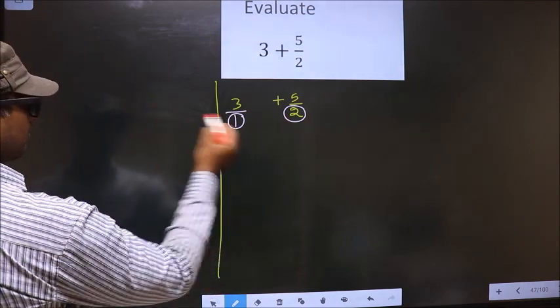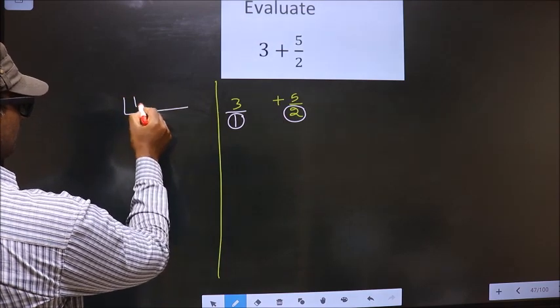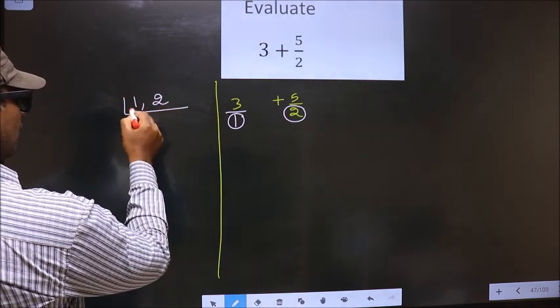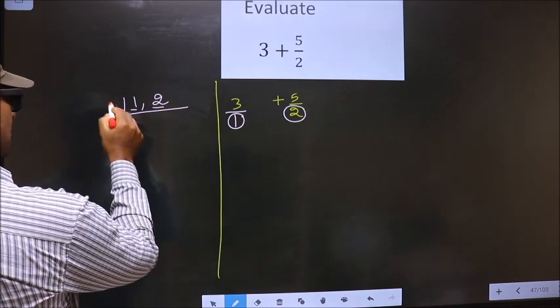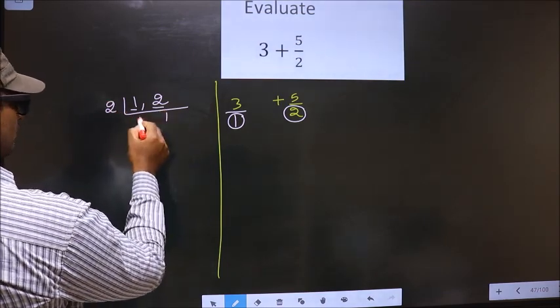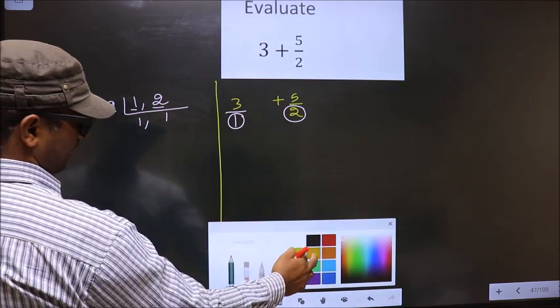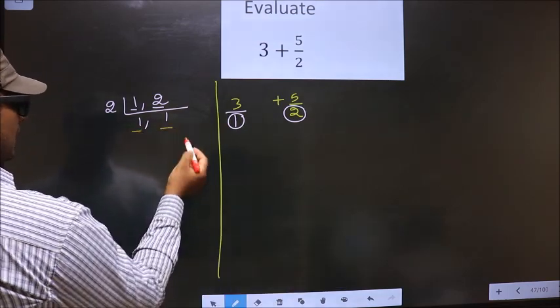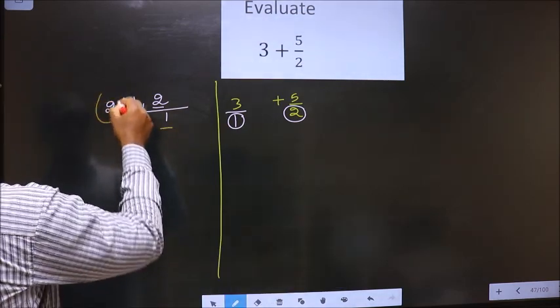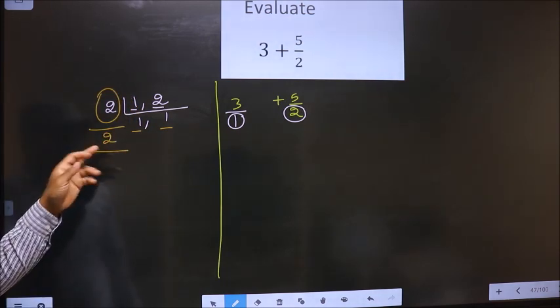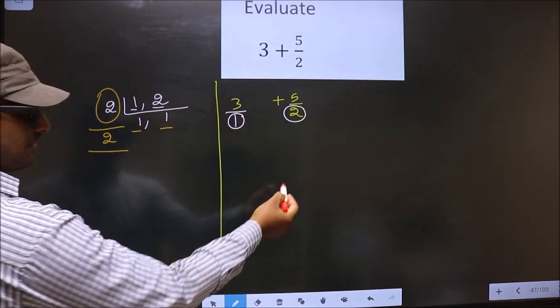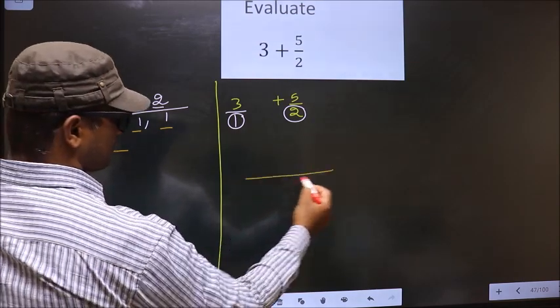The LCM of 1 and 2. We already have 1 here, so the other number is 2. 2 is the prime number, so 2 once is 2. We got 1 in both the places, so our LCM is this number, that is 2. Once you got the LCM, this LCM we should write here in this way.